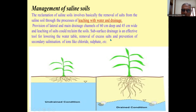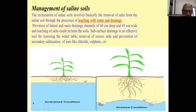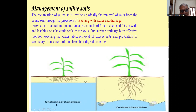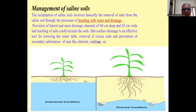Sub-surface drainage enables removal of excess salt and prevention of secondary salinization of ions like chloride, sulfate, etc. When there is a drained condition, plant growth and root development are better. But when there is an undrained condition, plant growth is poor and root biomass is also low. So drainage is required to reclaim the soil.